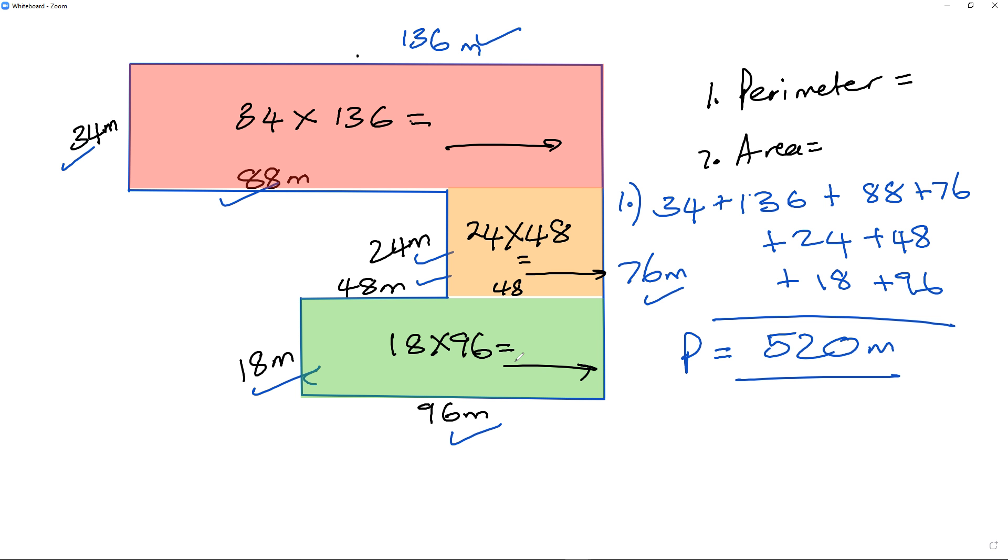Okay, so 34 times 136 comes to 4624. And then I've got 24 multiplied by 48 comes to 1152. And 18 times 96 is 1728.